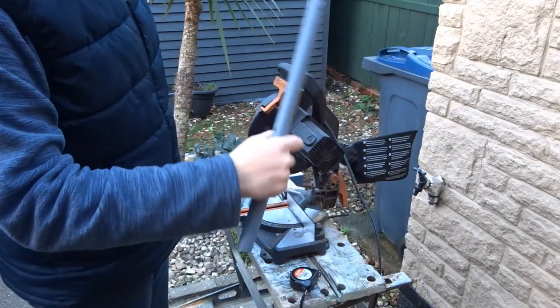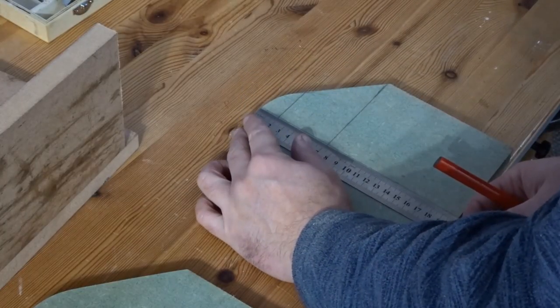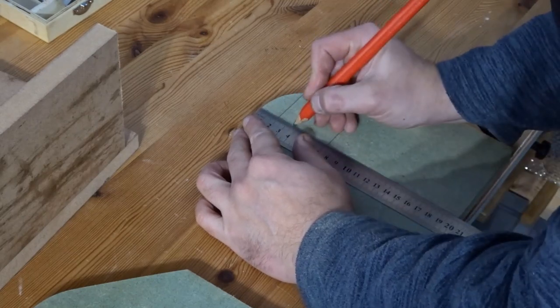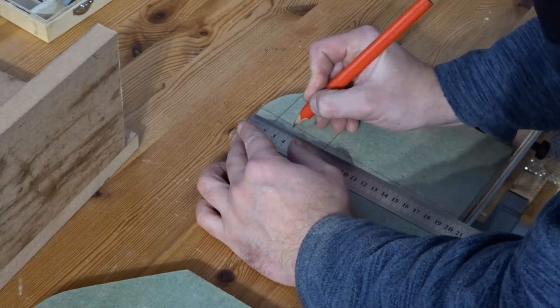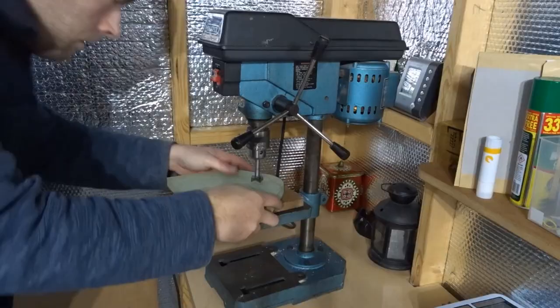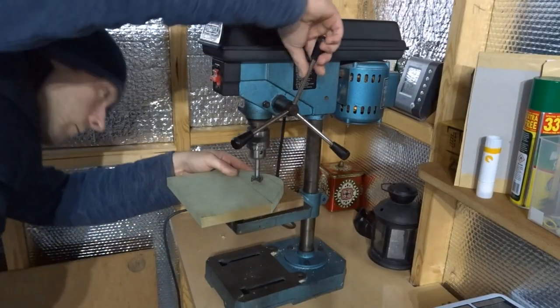When I'd finished messing around with it I went back inside and now I needed to mark up where I was going to drill the hole which would accommodate the handle. For that I used a forstner bit. I think it was 25mm.